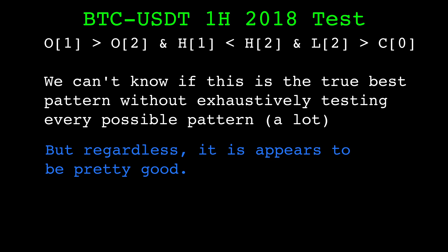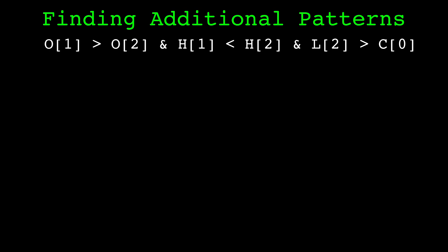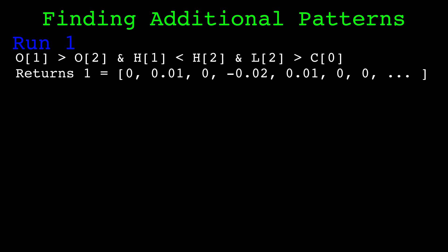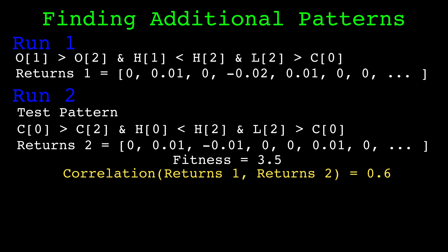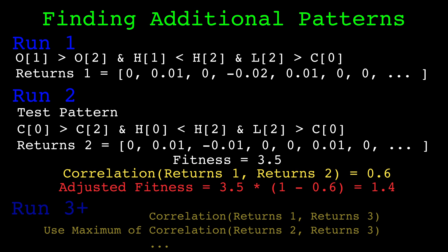Is this the only high performing pattern? No. We can find additional high performing patterns by modifying our fitness function. We find our first pattern normally, but save the returns used to calculate its fitness. Then we start the genetic algorithm again, and after computing the fitness of any pattern on the second run, we also find the Pearson correlation between the first run's pattern returns and the returns of the pattern currently being evaluated. The correlation returns a value between negative 1 and 1, with 1 being a perfect correlation — the exact same pattern. We adjust the fitness of the pattern by 1 minus the correlation value, so if the patterns are exactly the same, the fitness will be multiplied by zero. This forces the genetic algorithm to evolve patterns uncorrelated to the first. For evolving additional patterns, we use the maximum correlation between the currently evaluated pattern and any of the prior found patterns.